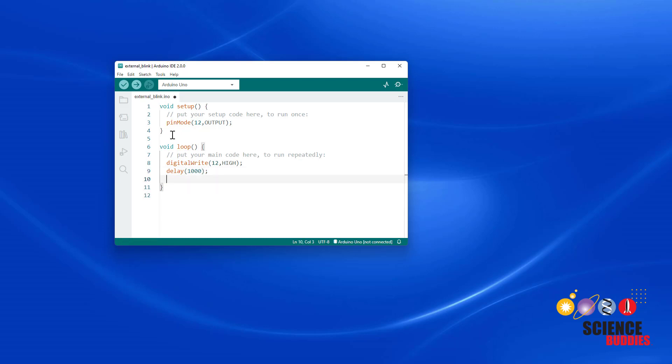After that, we want the pin to go low. So we're going to type digitalWrite, open parentheses, 12, LOW. Note that the Arduino IDE automatically fills in the closed parentheses for me when I type the open parentheses. And again, we're going to end that line in a semicolon.